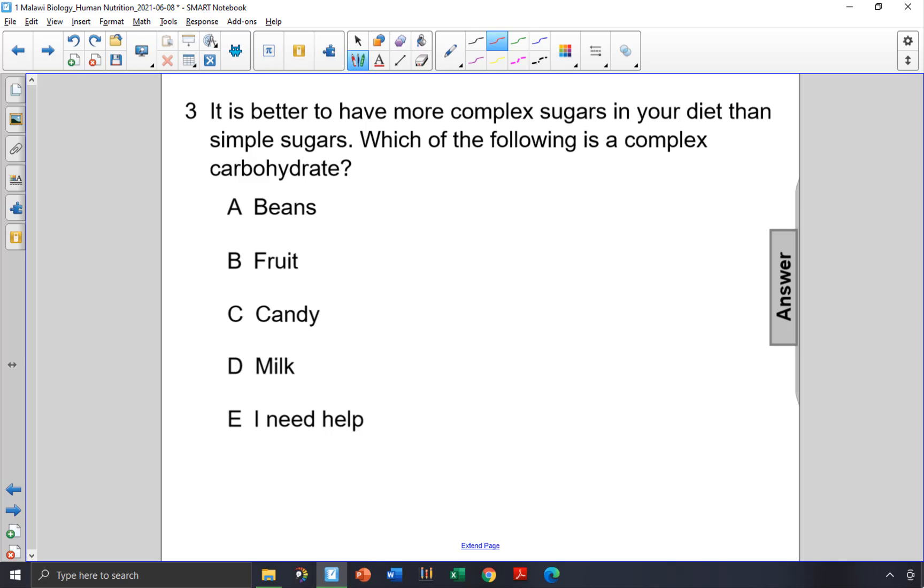It is better to have more complex sugars in your diet than simple sugars. Which of the following is a complex carbohydrate? Fruit has a lot of fructose, and fructose is a very simple sugar, so that is not the answer.